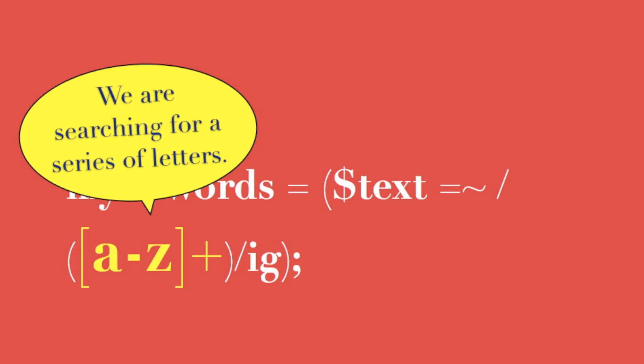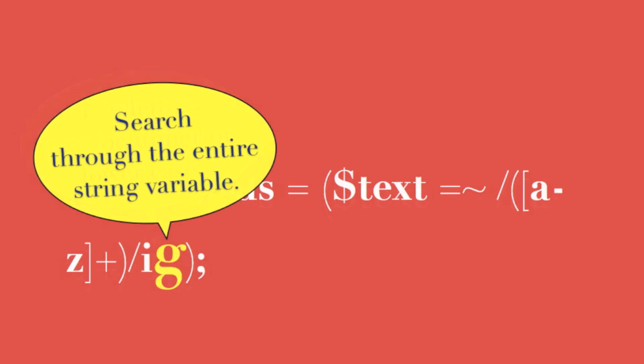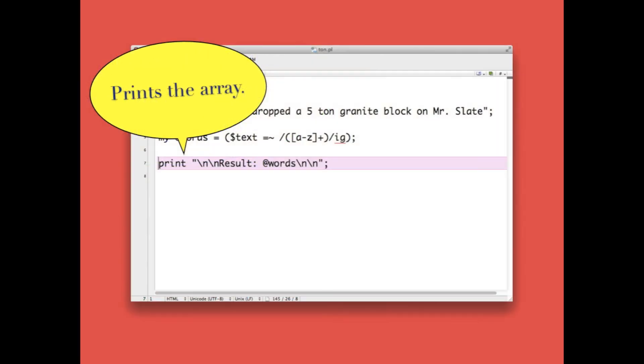Our search pattern scans for the letters of the alphabet a through z, ignoring case and searching the entire length of the character string. When it finds a set of letters, it stores it as the next element in the array @words.